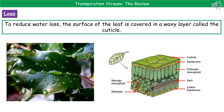Because it's not always advantageous for plants to lose vast quantities of water, they have certain adaptations that help reduce water loss. One of these is that the surface of the leaf is covered in a waxy layer called the cuticle. Plants in particularly dry areas will have a thicker waxy cuticle to reduce water loss further.